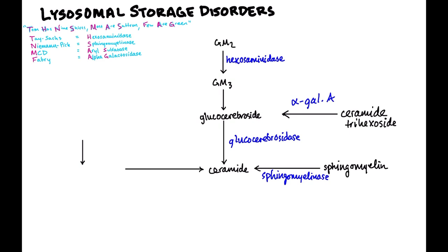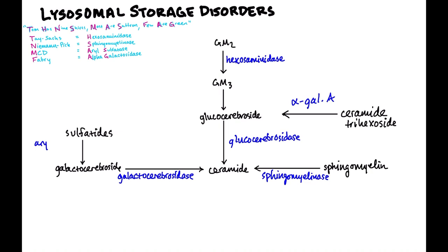Another way we get to ceramide is through the breakdown of sulfatides. Sulfatides get broken down into galactocerebroside, and then galactocerebroside gets broken down to ceramide by galactocerebrosidase. The enzyme that breaks down sulfatides to galactocerebroside is called arylsulfatase A. That's the complete pathway — as long as you know the products, you should be able to figure out the enzyme names.